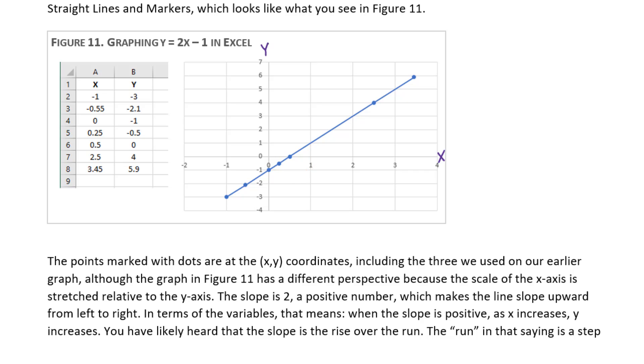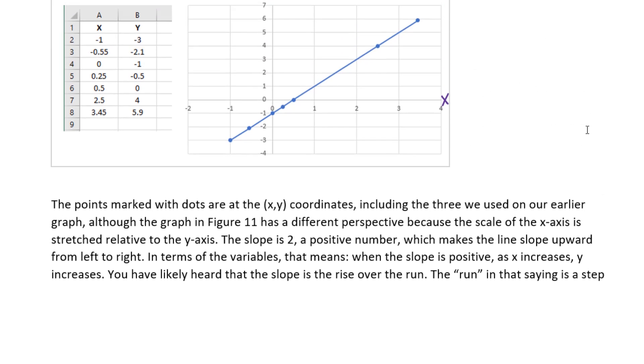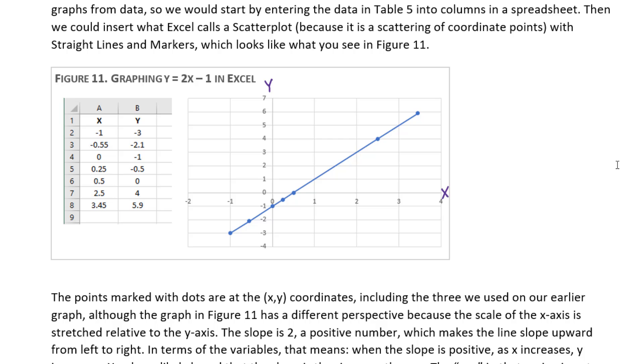You have likely heard that the slope is the rise over the run. The run has a specific meaning in that saying. The run is a step of 1 to the right on the x-axis, so it's an increase of 1 in x. Given that definition of run, what a slope of positive 2 means is that this line rises two steps up the y-axis for every step in a positive direction along the x-axis.